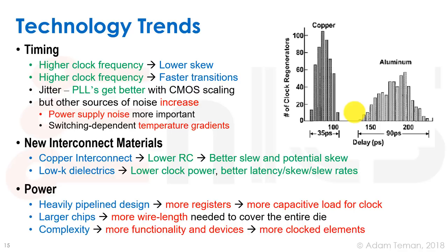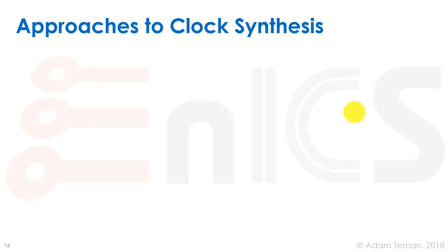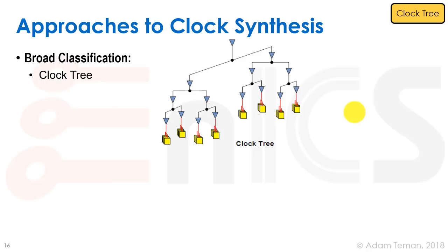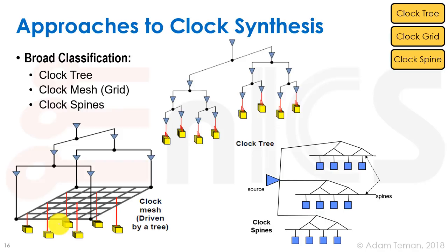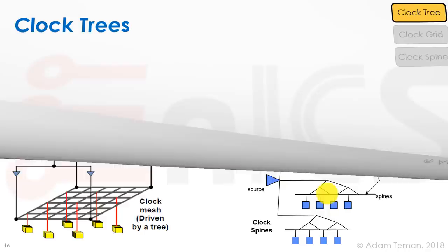Increased complexity means more clocked elements. We classify clock tree approaches into three categories: a clock tree (used in standard CTS), which has a root source branching through buffers down to clock sinks; a clock mesh or grid covering the whole chip with sinks hanging off it; and clock spines, an intermediate solution where the source drives spine lines from which flip-flops hang.